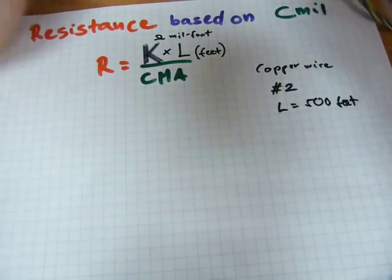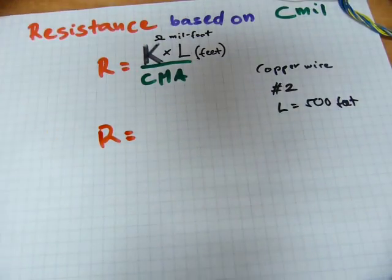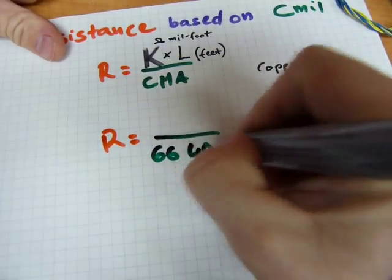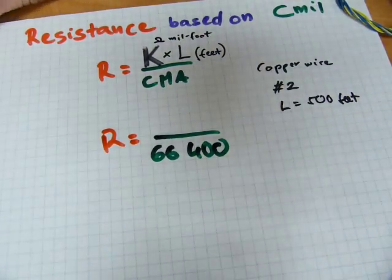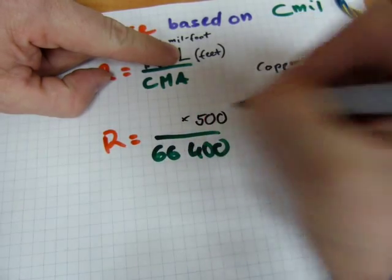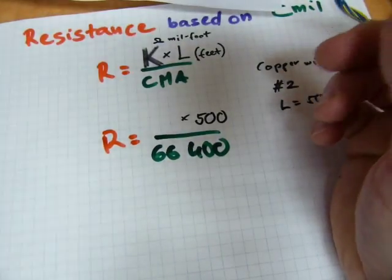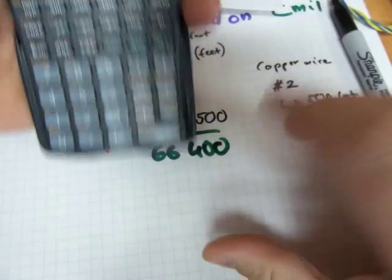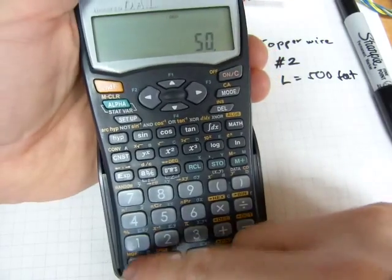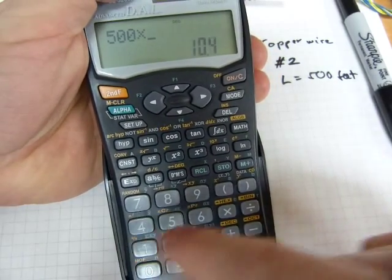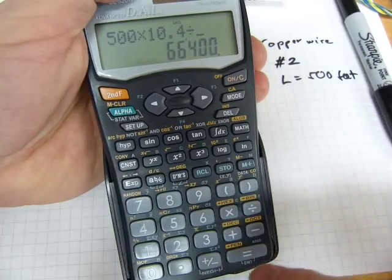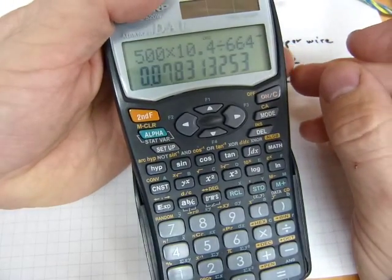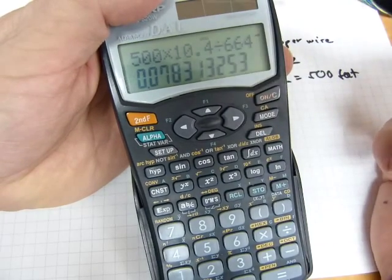So, the resistance will be calculated. The circular mill number was 66,400. And we've got length there, so that's gonna be 500 feet. And the K number for copper, it was 10.4. And just multiply everything together, and we're jolly good. 500, and then a division times 10.4 divided by 66,400 equals... There. Not many ohms. And that's 0.078. Let me round it up to 0.08 ohms.